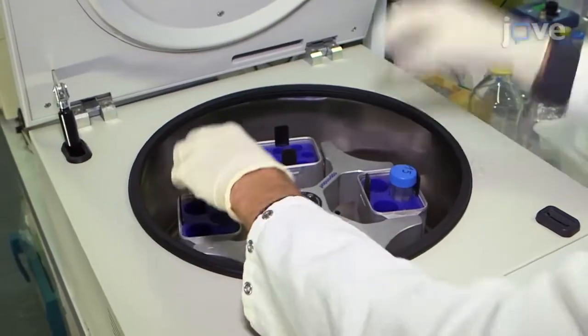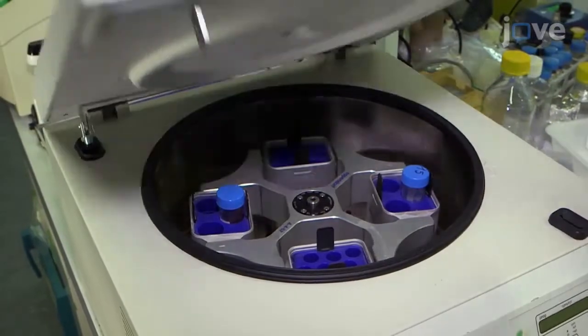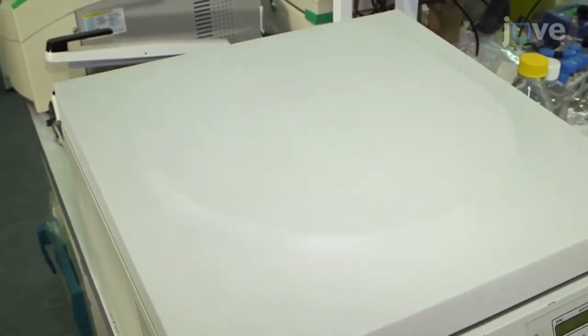Then, centrifuge the tubes of collected blood at 650 g for 20 minutes to separate the cells from the plasma fraction.